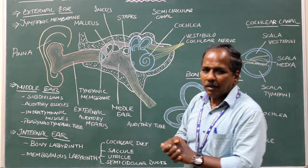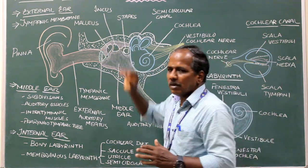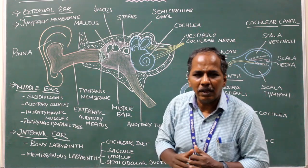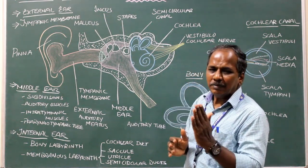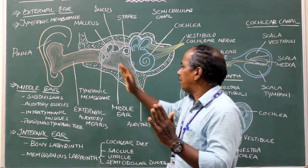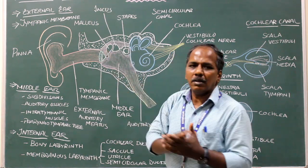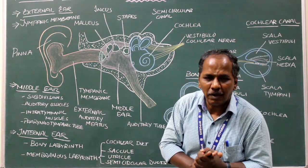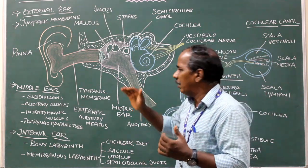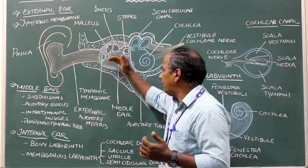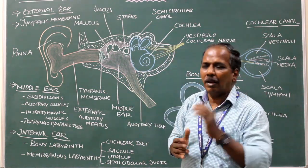Epitympanum is the part of the cavity present above the tympanic membrane. Mesotympanum is the part of the cavity present opposite to the tympanic membrane. Hypotympanum is the part of the cavity present below the tympanic membrane.